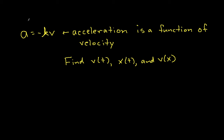To do this, we'll start by deriving the equations we'll use to find the relationships between velocity as a function of time, position as a function of time, and velocity as a function of x. I'm doing this because it's helpful to understand how these equations are developed, so that if you are in a different situation, you can develop them yourself.